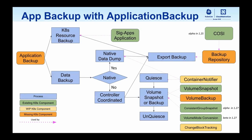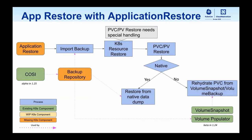Let's take a look at this diagram again. COSI moved to alpha in 1.25. Volume mode conversion moved to beta in 1.27. Consistent group snapshot is targeting alpha in 1.27. Volume populator moved to beta in 1.24. As shown in these diagrams, we have made progress — the colors of COSI, volume populator, and consistent group snapshot have changed from yellow (work in progress) to green (existing). We hope to make more progress in the future.